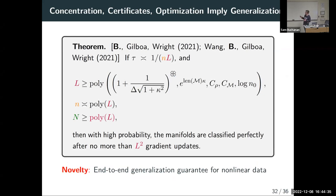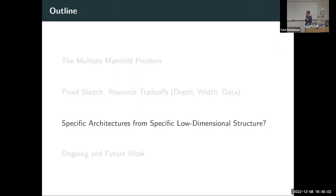To summarize, combining all those pieces and additional analysis, we have this main result that gives an end-to-end generalization guarantee when the depth of the network is set relative to the geometry, samples are set relative to the capacity of the network. Now, having described that result, I want to zoom out and talk about the connection to image data discussed in the introduction, seeing what studying the multiple manifold problem is actually telling us about deep neural network practice and invariance.